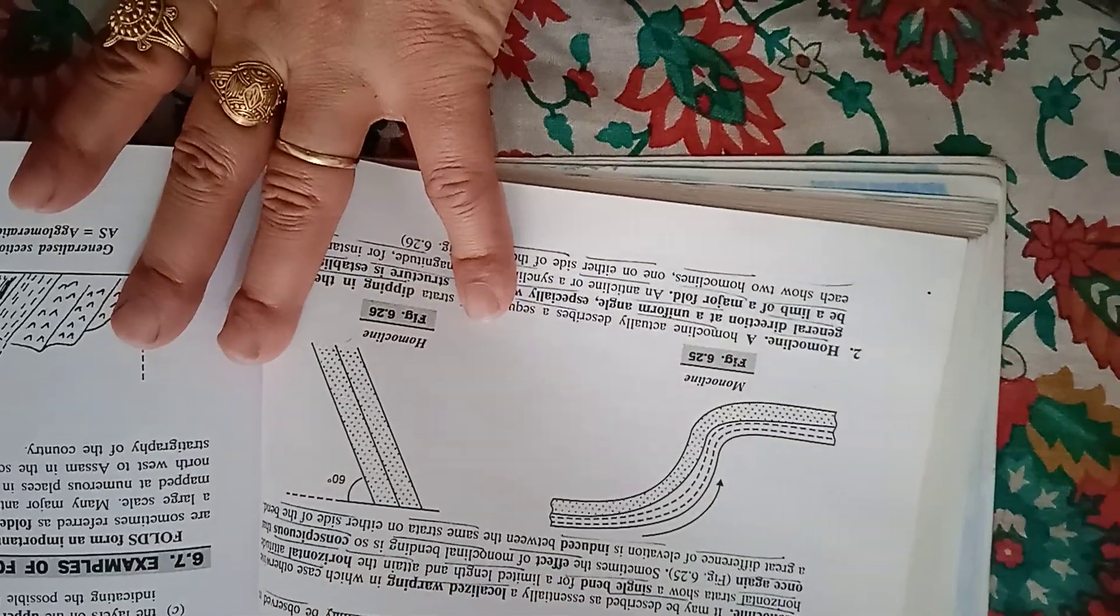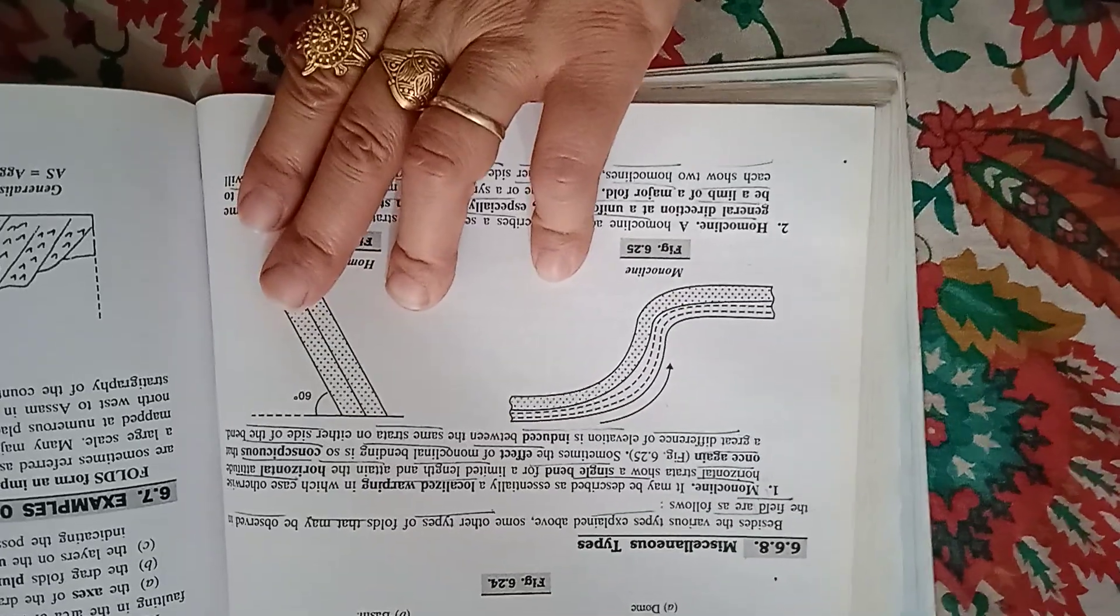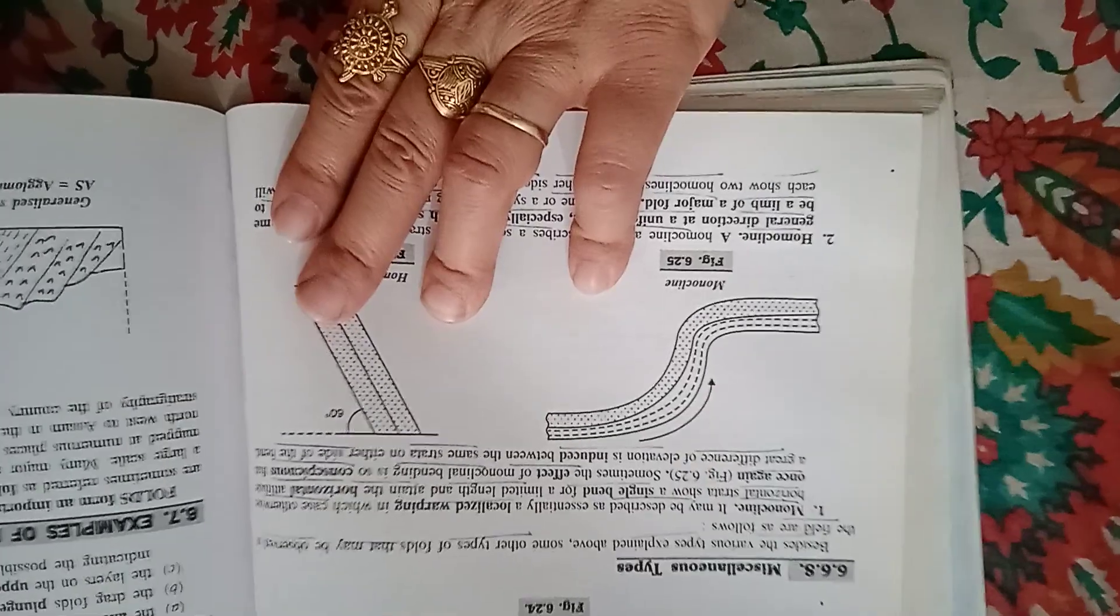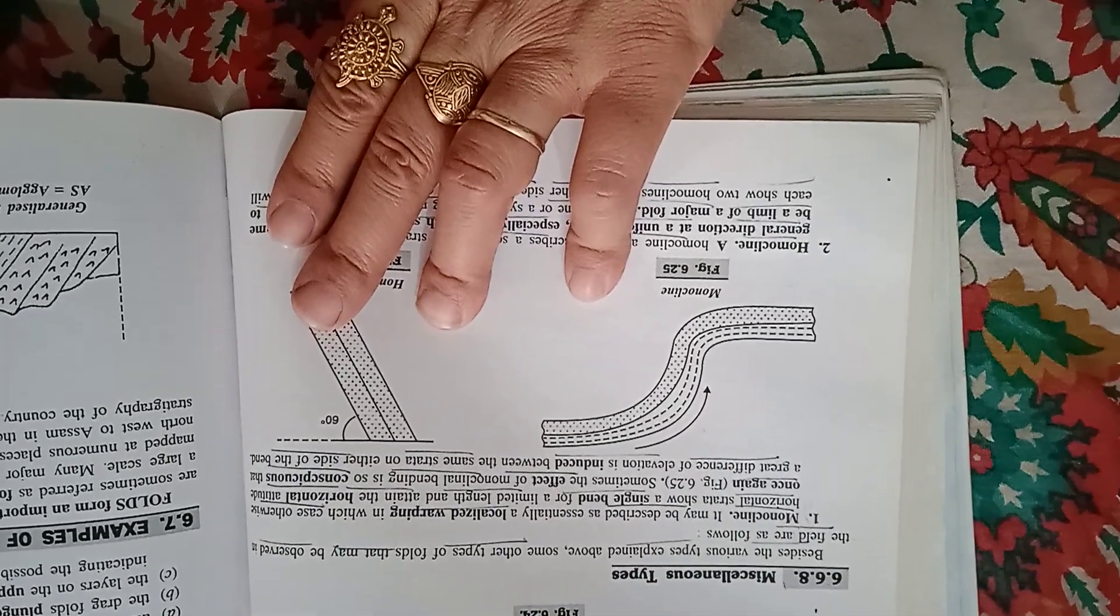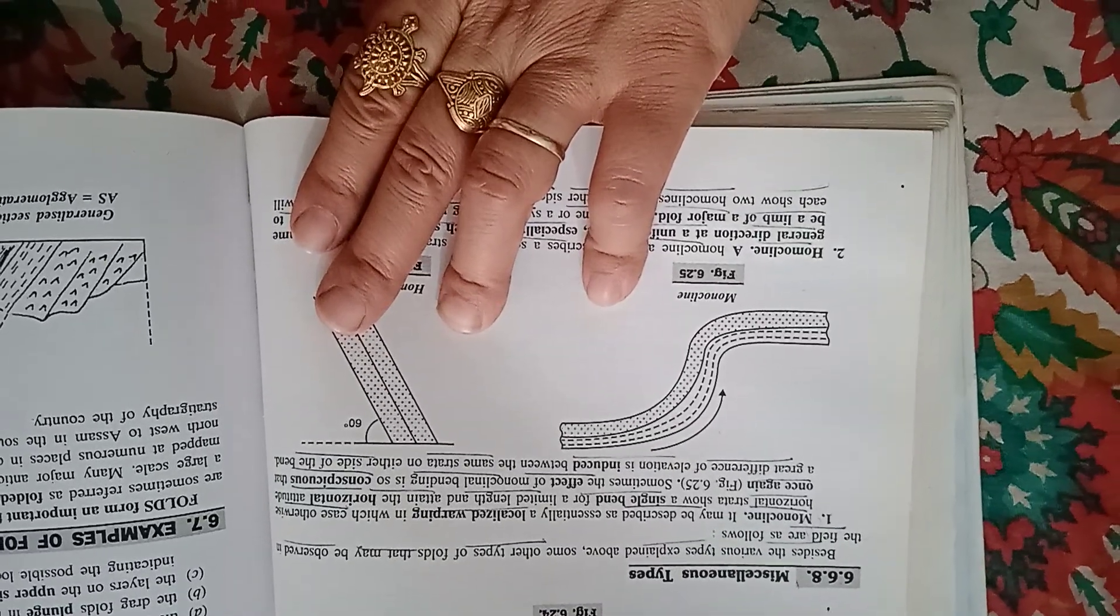In Chapter 6, structural features of rock. Miscellaneous types: besides the various types explained above, some other types of folds that may be observed in the field are as follows. Monoclines may be described as essentially a localized warping.